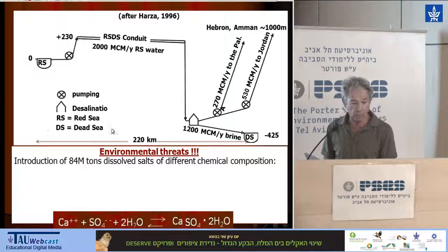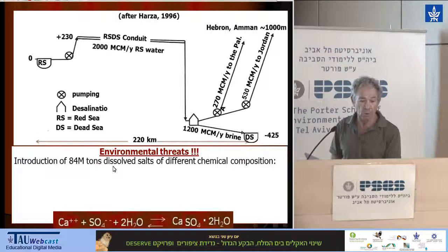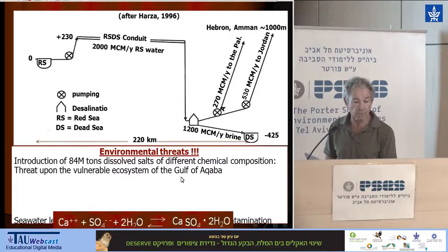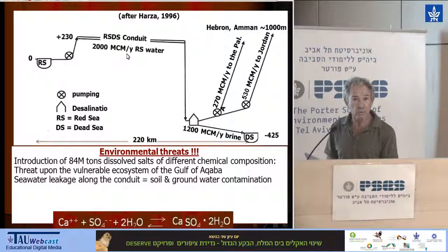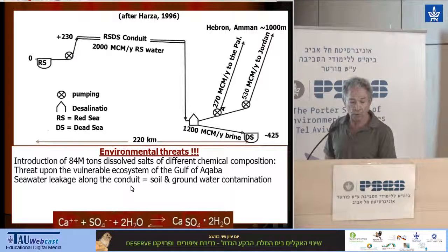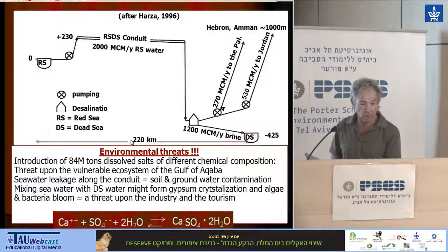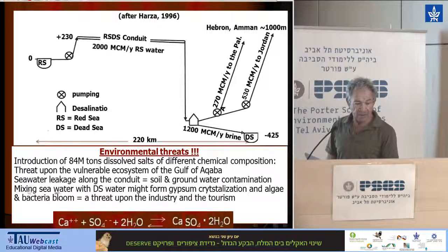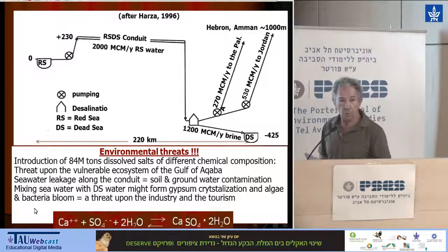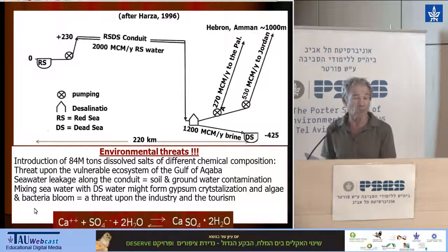But there are problems. First of all, introduction of a large amount of dissolved salt in a different chemical composition doesn't have promising outcomes. There is a threat upon the vulnerable ecosystem of the Gulf of Aqaba — currents are the main factor in the marine ecosystem — and we are speaking about 2 billion cubic meters per year of pumping. There is also a threat of seawater leakage along the conduit, which will spoil soils and contaminate aquifers. Mixing seawater with Dead Sea water might form gypsum crystallization, and in addition a bloom of bacteria, which will have a very bad impact on tourism.